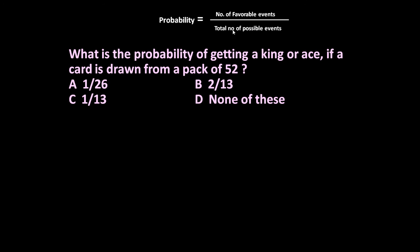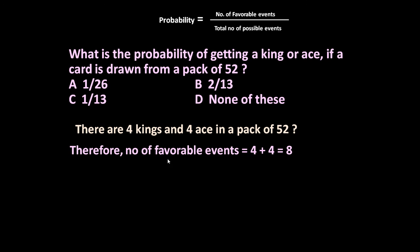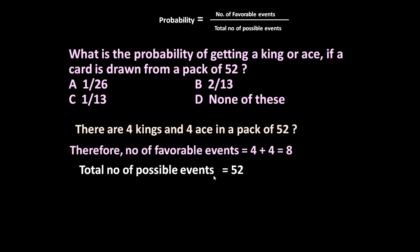In a pack of 52 cards there are four aces and four kings. So the number of favorable events equals four kings plus four aces, which is eight. If I draw a single card from a pack of 52, eight cards are in my favor. The total number of possible events is 52.